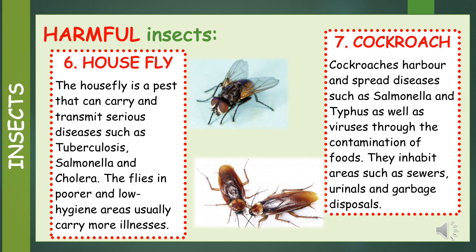Number 7: Cockroaches. Cockroaches harbor and spread diseases such as salmonella and typhus, as well as viruses through the contamination of food. They inhabit areas such as sewers, urinals and garbage disposals.